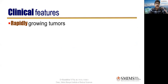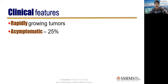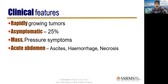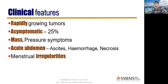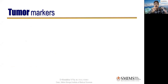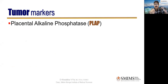Clinical features: rapidly growing tumor — within six months the patient complains of a big mass. Asymptomatic in 25% of cases. The usual symptom is pressure symptoms from the big mass. Acute abdomen can occur due to ascites, hemorrhage, or necrosis. They very rarely twist, unlike dermoid cysts, because they are heavy. Menstrual irregularities can occur if there is a component of granulosa cells. Weight loss can occur as energy is taken by tumor growth.